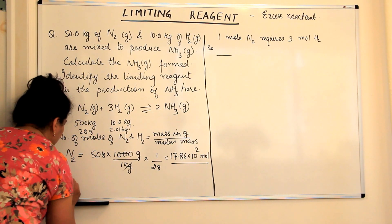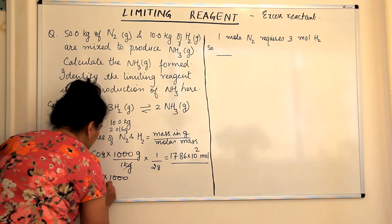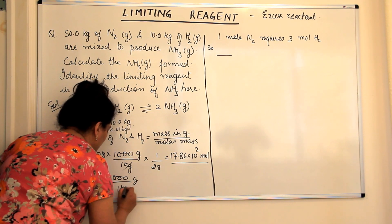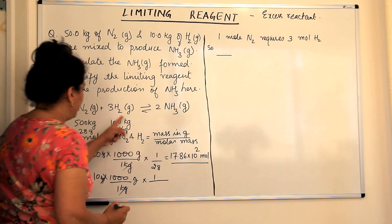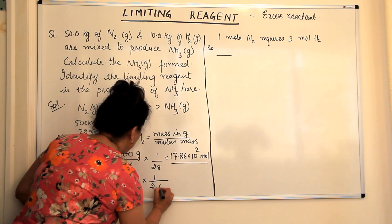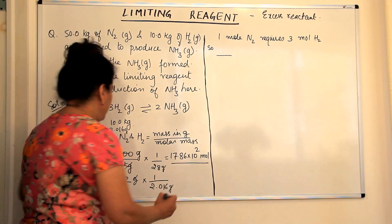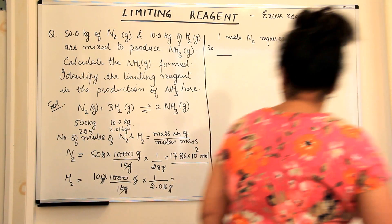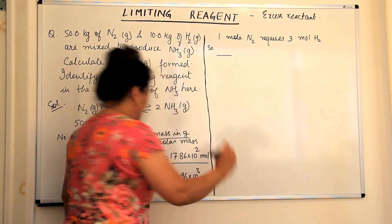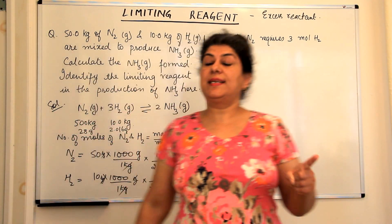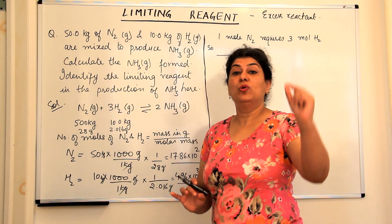What about hydrogen, H₂? It's the same process. We have 10 kg converted into grams: 10 × 1,000 = 10,000 grams, divided by the molar mass of 2.016 grams. The grams cancel out, and we are left with 4.96 × 10³ moles. So we have 17.86 × 10² moles of nitrogen and 4.96 × 10³ moles of hydrogen.